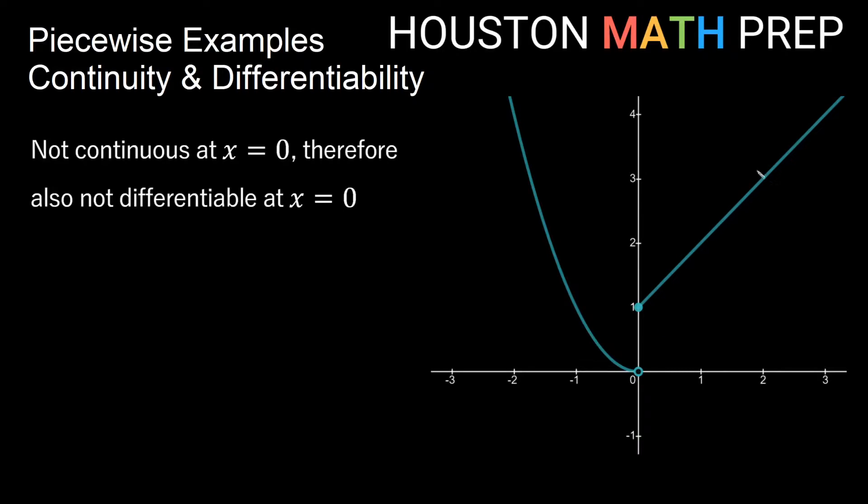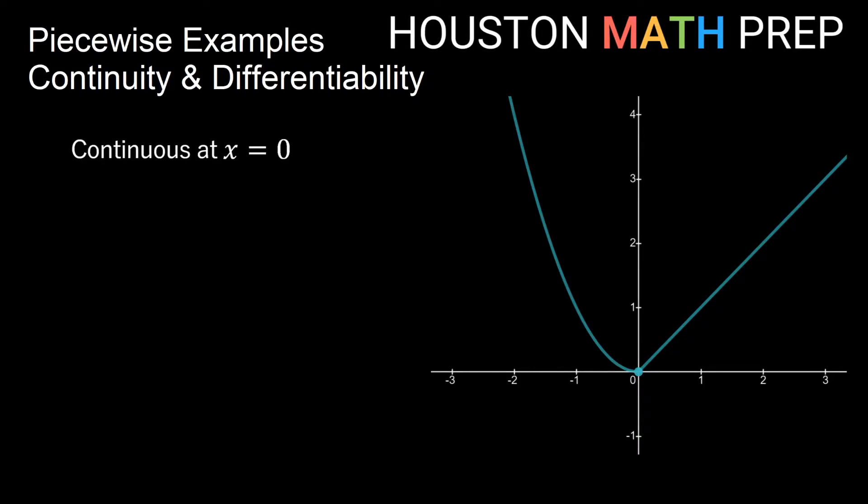You can imagine if I were to take this linear piece and slide it downward vertically so that this closed dot fit inside this open hole, then we would have a picture that looks like this and now this would be continuous at x equals zero. We do still have a little bit of a sharp corner there, but it is connected. There's no break in the graph anymore at x equals zero. So this value in the piecewise function where we go from one function to the other, we want the y values to be the same.